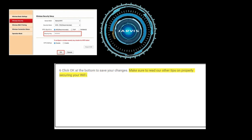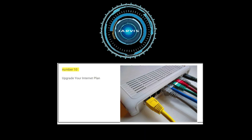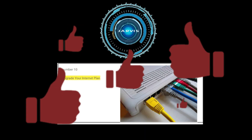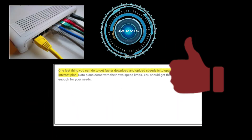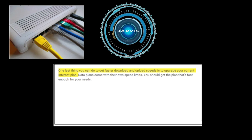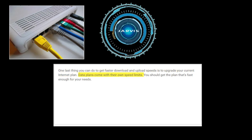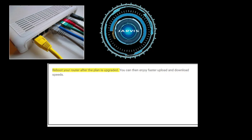Make sure to read other tips on properly securing your WiFi. Number ten: upgrade your internet plan. One last thing you can do to get faster download and upload speeds is to upgrade your current internet plan. Data plans come with their own speed limits, so get a plan that's fast enough for your needs. Reboot your router after the plan is upgraded, and you can then enjoy faster upload and download speeds.